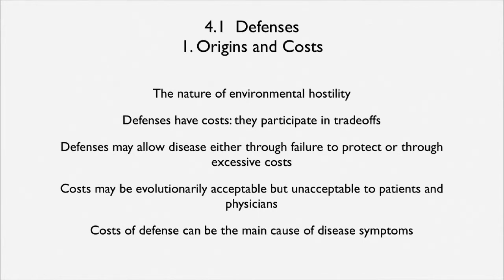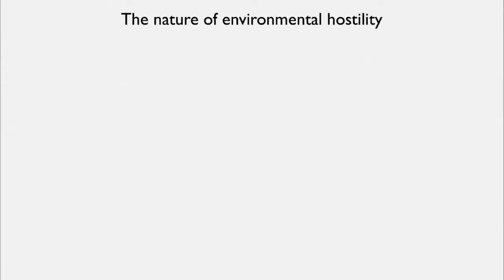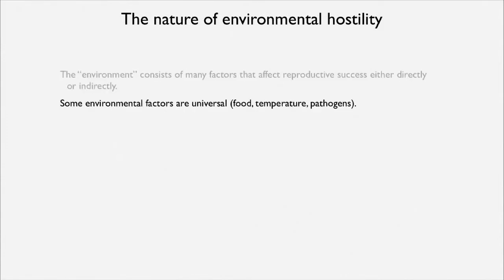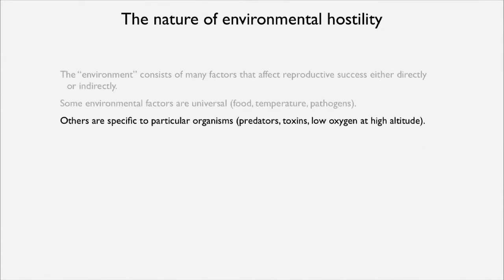In some cases, the cost of defense can be the main cause of disease symptoms, and we will see some dramatic examples of that. So first, what is the nature of a hostile environment? The environment consists of many factors, and they can affect reproductive success and health either directly or indirectly. Some of them are universal — things like food, temperature, and pathogens are experienced by all organisms — but others are quite specific to particular organisms, such as particular predators or low oxygen.